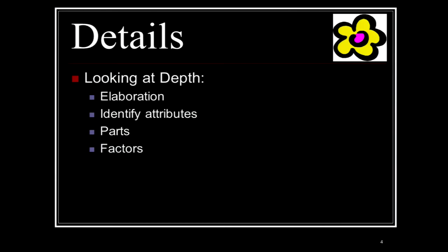There are going to be four definitions of the way we define details: elaboration, identify attributes, parts, and factors. This presentation goes from second to sixth grade, so I usually let second graders pick 'parts' because they understand 'what are the parts of the story.' But from fourth, fifth, and sixth grade, I like them to use 'identify attributes' or 'elaboration.'